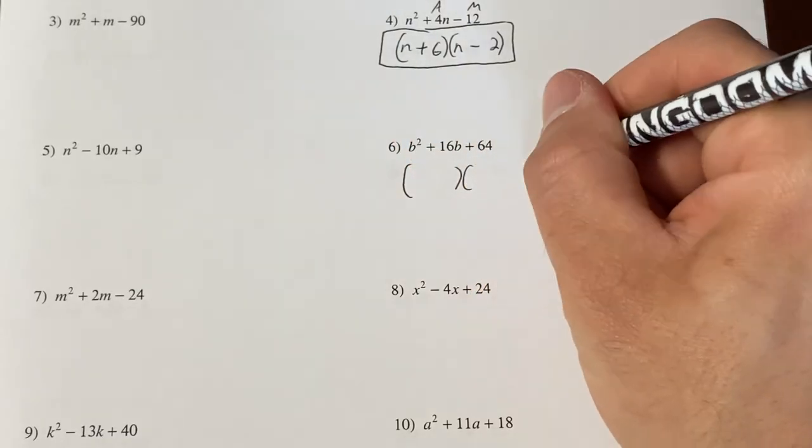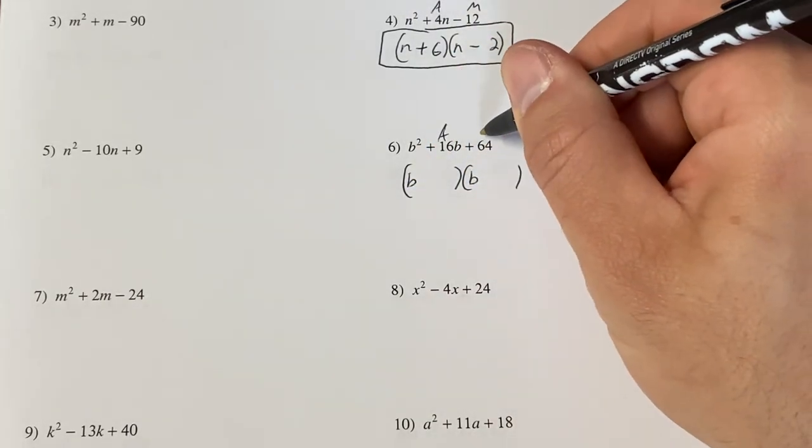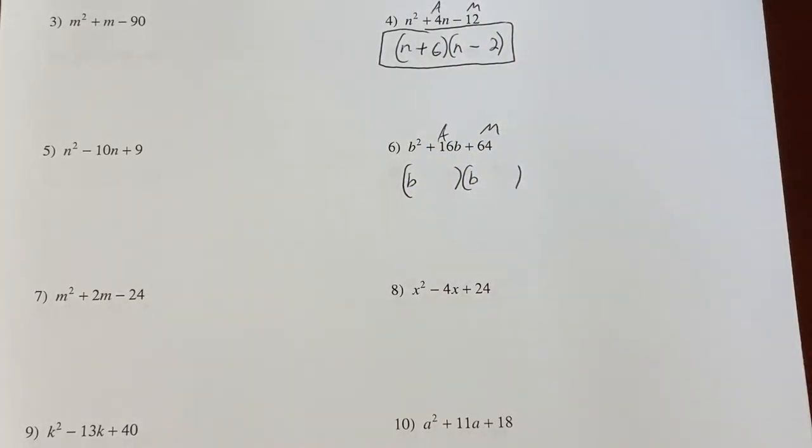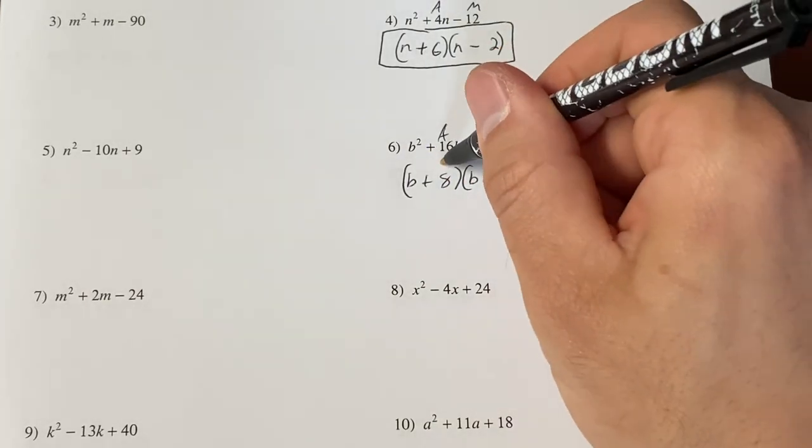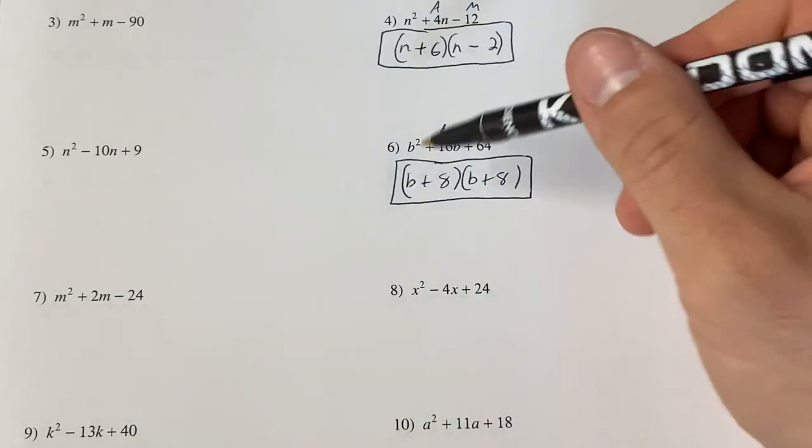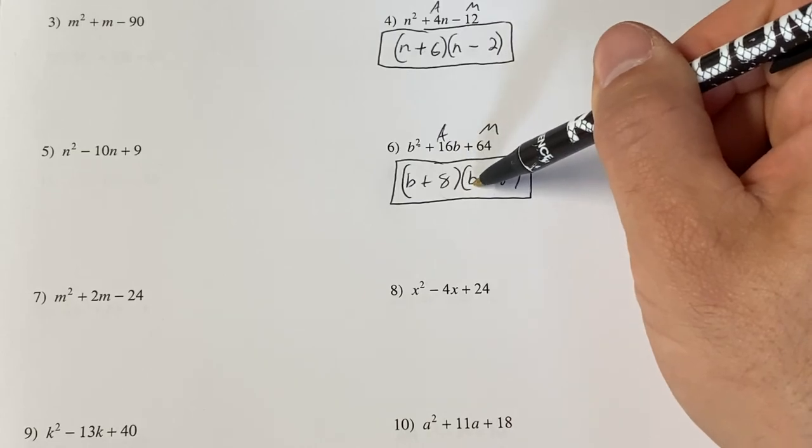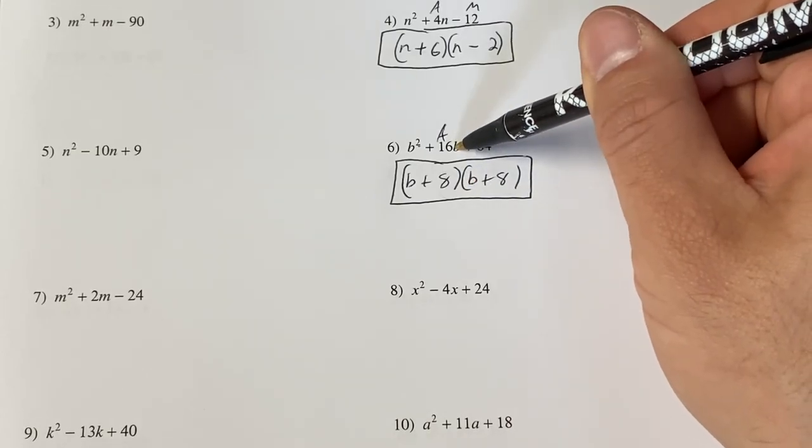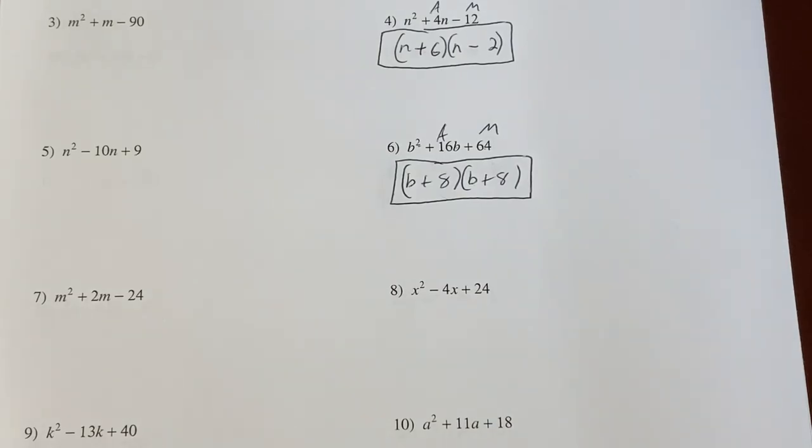Rolling right along. Maybe we'll do two more on this page. b and b. Add to 16. Multiply to 64. Hopefully you're saying to yourself, that's really easy. Because positive 8 and positive 8 will multiply to positive 64 and will add to positive 16. And again, check these by foiling. Firsts, b squared. Got it. Outers, plus 8b. Inners, plus 8b. That's a plus 16b. Lasts, plus 64 when I multiply. We've got it.